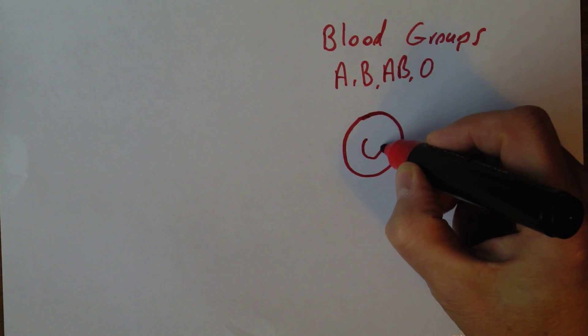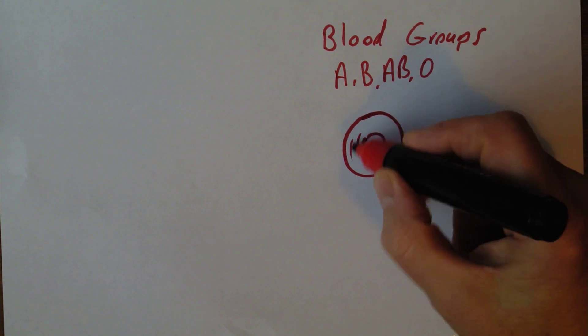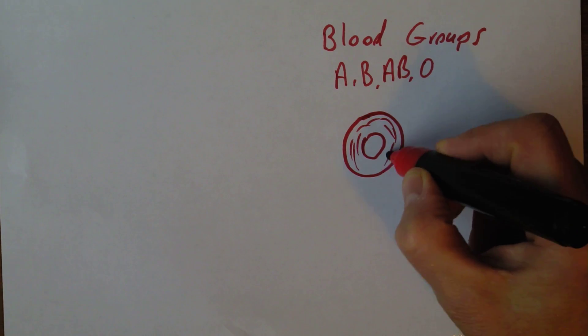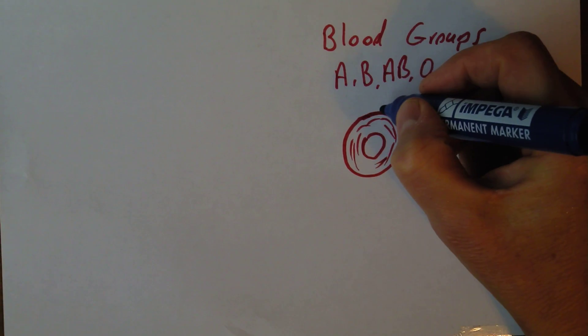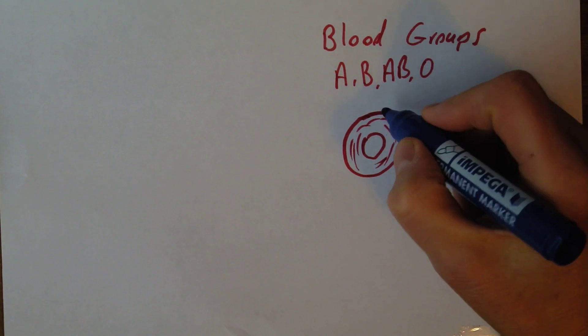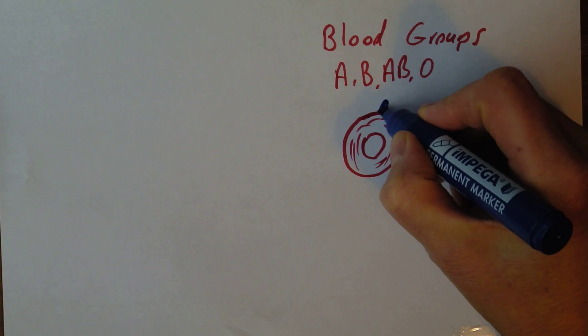So here we have our red cell, the erythrocyte, darker on the outside because it's thicker on the outside. And the blood groups are actually antigens on the surface of the cell.